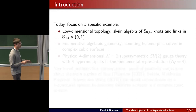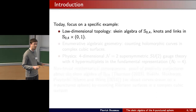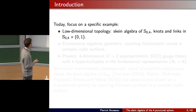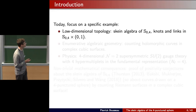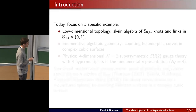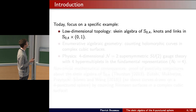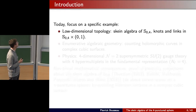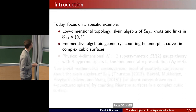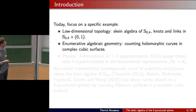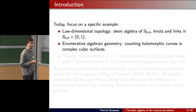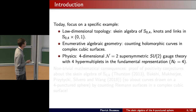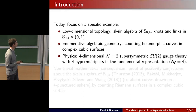In this talk we'll focus on a very specific, concrete example. From the low-dimensional topology point of view, we'll talk about the skein algebra of the four-punctured sphere — S_{0,4} denotes a sphere minus four points — and knots and links in the three-manifold which is the product of the surface cross the open interval (0,1). The enumerative algebraic geometry part is about counting holomorphic curves in complex cubic surfaces. The physics part concerns four-dimensional N=2 supersymmetric SU(2) gauge theory with four hypermultiplets in the fundamental representation.